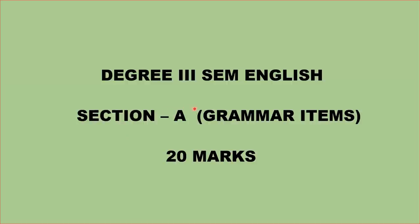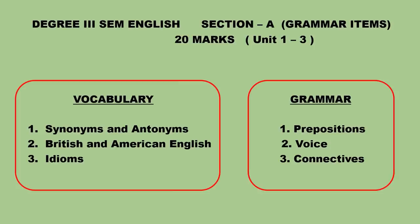Hello everyone. Today we are going to discuss Degree Third Semester English. There are three units in Degree Third Sem, and all three units have vocabulary items and grammar items. Under vocabulary items we have synonyms and antonyms, British and American English, and idioms. Under grammar we have prepositions, voice — that is active and passive voice — and then connectives.